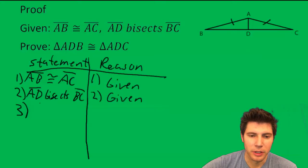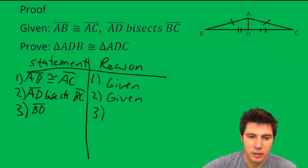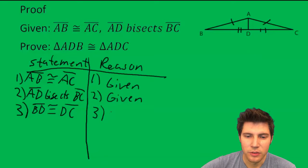For step three, I'm going to recognize bisect here. So I know I'm going to use the definition of bisect. And if AD bisects BC, I know that these two sides are equal. So I'm going to say BD is congruent to DC. And the reason for that is definition of bisect.